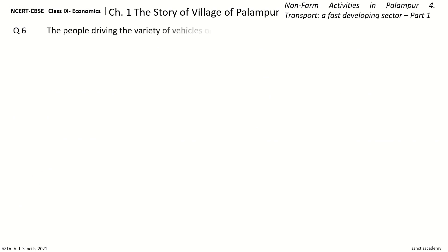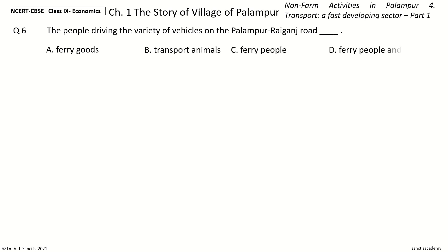Question 6: The people driving the variety of vehicles on the Palampur-Raiganj road dash. The options are: Ferry goods, Transport animals, Ferry people, Ferry people and goods. And the answer is Ferry people and goods. So, the people driving on the Palampur-Raiganj road ferry people and goods.